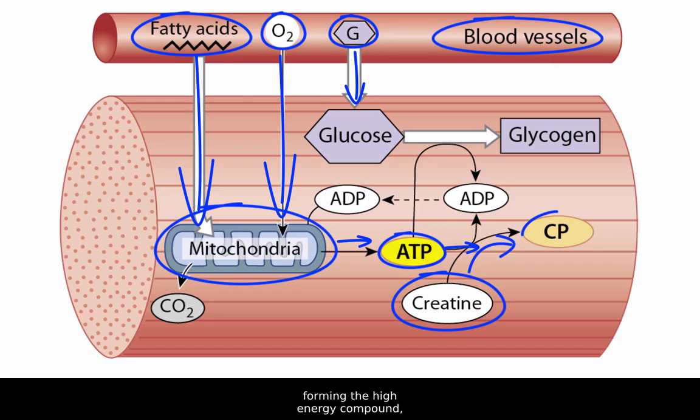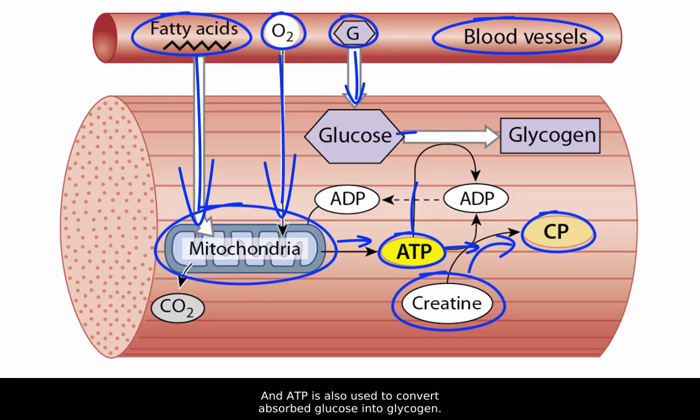Surplus ATP combines with creatine, forming the high-energy compound creatine phosphate, or CP, and ATP is also used to convert absorbed glucose into glycogen.